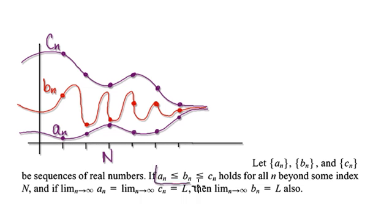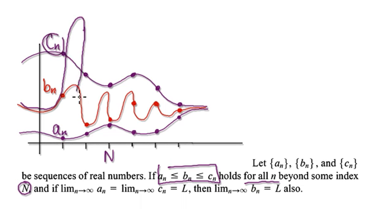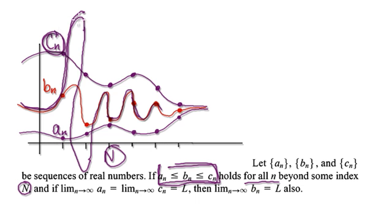So the red line does have the right to go beyond c_n or below a_n before capital N. It can do anything before that point. But beyond capital N, it must obey the condition a_n ≤ b_n ≤ c_n — meaning the red line must remain trapped between the top and bottom lines.